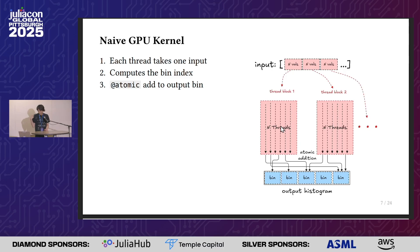Here's what a naive kernel looks like. Each value in the input is taken by one thread, which directly computes the bin index and does atomic addition into the corresponding bin.